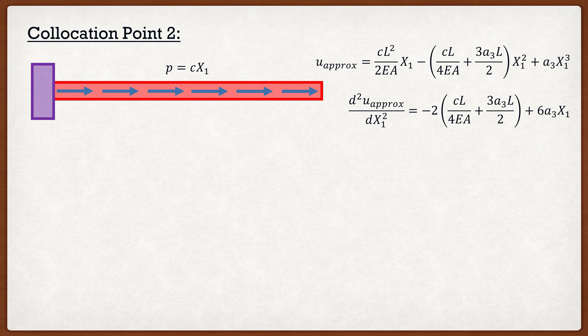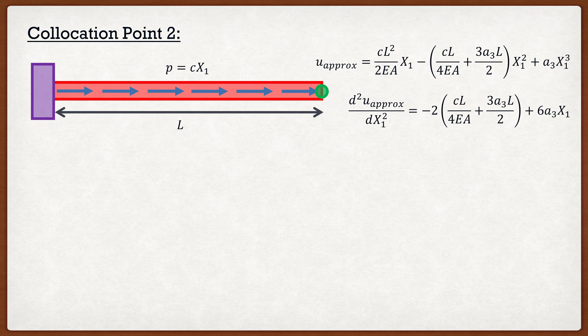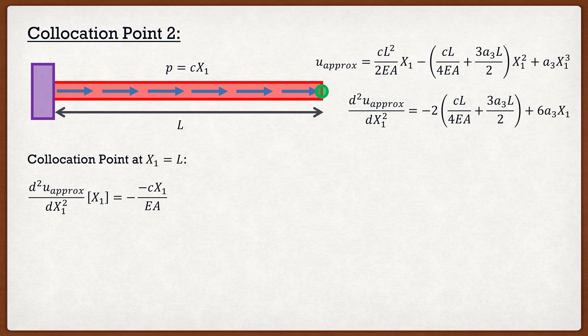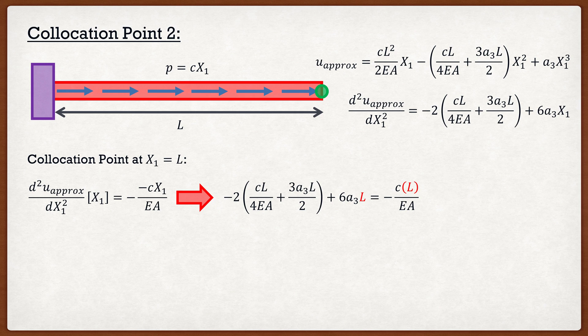I'm going to take the updated second derivative of this approximation and pick another collocation point, this time x1 equal to L. Again, you can pick whatever point you want — you'll still end up with an equation for the unknown. Substituting x1 equal to L into the differential equation gives an equation where the only unknown is a3. Solving it, we get a3 equal to negative c divided by 6EA.